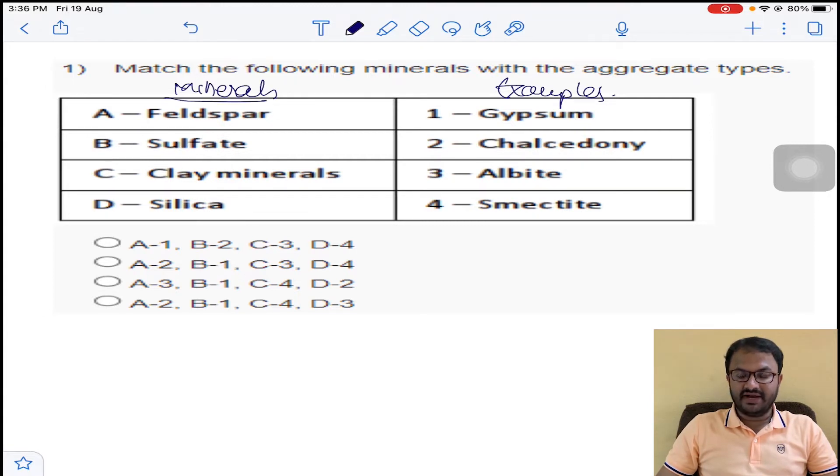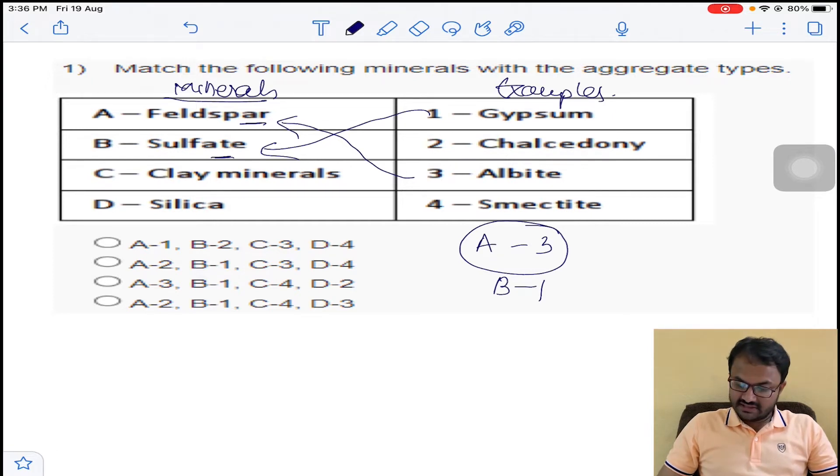The first one is feldspar. The mineral from this mineral will get an aggregate type: albite. So that is A is 3. For sulfate, you will get gypsum. B is 1. Coming to clay minerals, smectite you will get from clay mineral, it is C4.